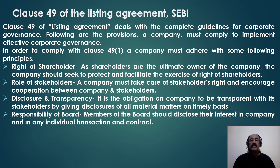Let us look at some of what Clause 49 requires a company to adhere to. The right of shareholders clearly says that shareholders are the ultimate owners of the company, and the company's job should be to protect and facilitate the exercise of shareholder rights — voting rights, decision-making rights — and to provide information regarding financial statements and changes in financial or accounting policies. Stakeholders' rights must also be taken care of, and cooperation between the company and stakeholders is essential. A shareholder is a person who has shares of the company; a stakeholder is a person who has an association with the company — a stakeholder need not be a shareholder, but a shareholder is essentially a stakeholder.